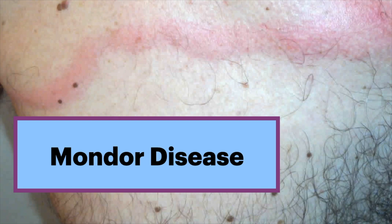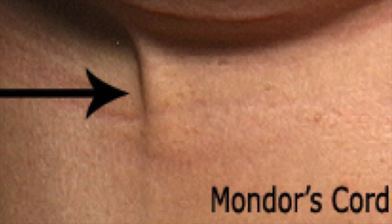Mondor's disease is a focal thrombophlebitis of a superficial vein in the breast. It can clinically present as a palpable, cord-like mass with associated pain, tenderness, and erythema. There are associations with trauma, breast surgery, and extreme physical activity.